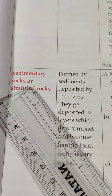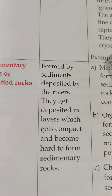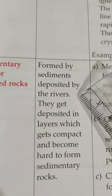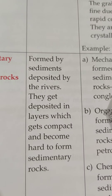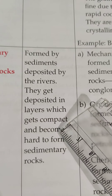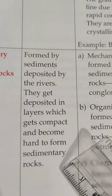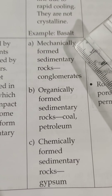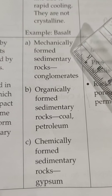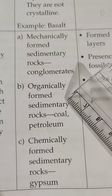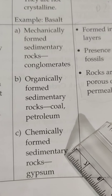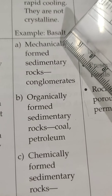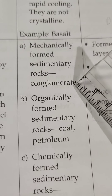Sedimentary rocks — by the name you can make out — are formed by sediments deposited by rivers. They get deposited in layers and finally become hard to form sedimentary rocks. They are formed by three ways: mechanically formed, organically formed, and chemically formed sedimentary rocks. An example of mechanical sedimentary rocks is conglomerates.